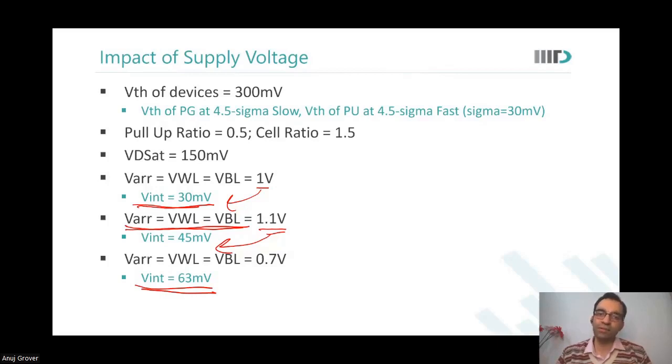It is kind of that because see the pass gate was never operating at its full strength. It was in linear region. Yes, sir. Yes, sir. Okay. That is what you need to see. What is in linear region? What is in saturation region?